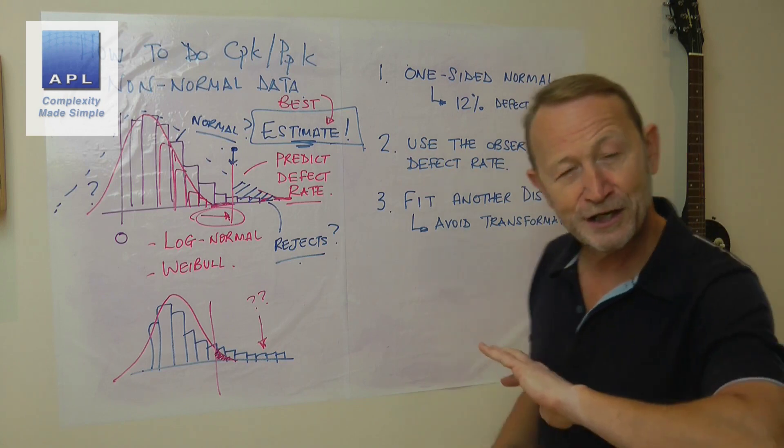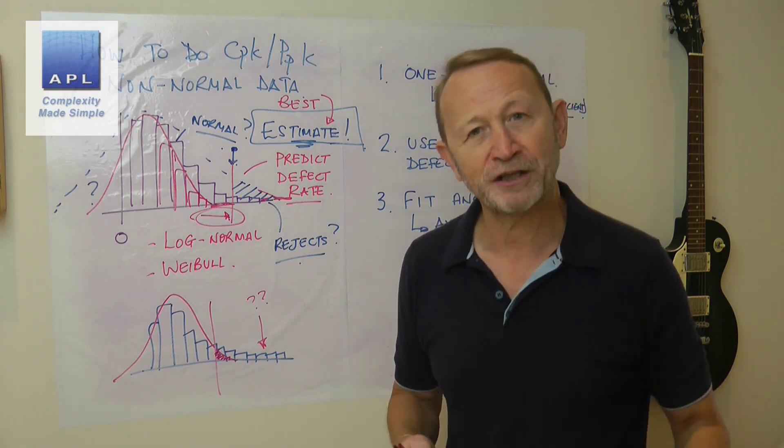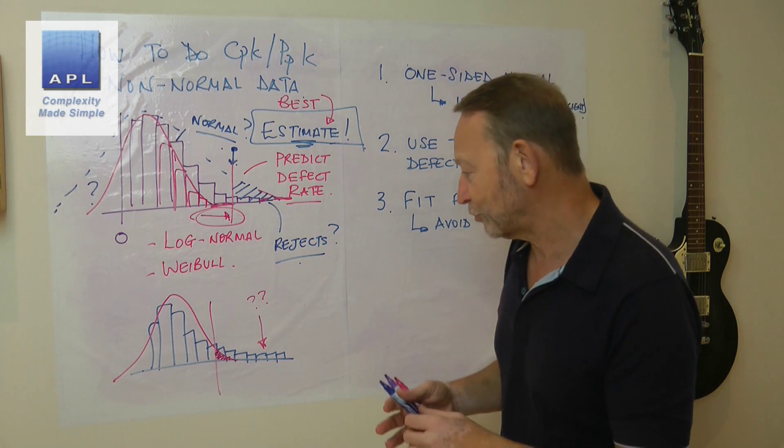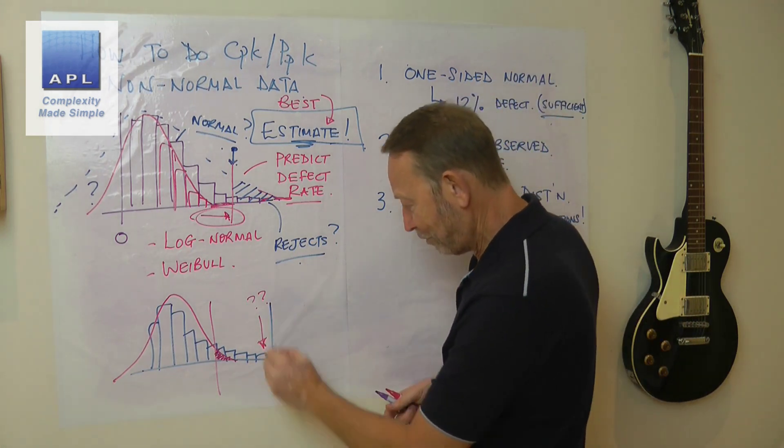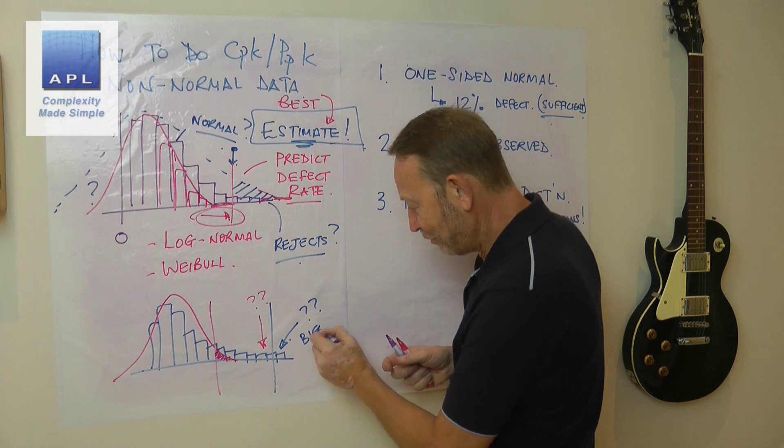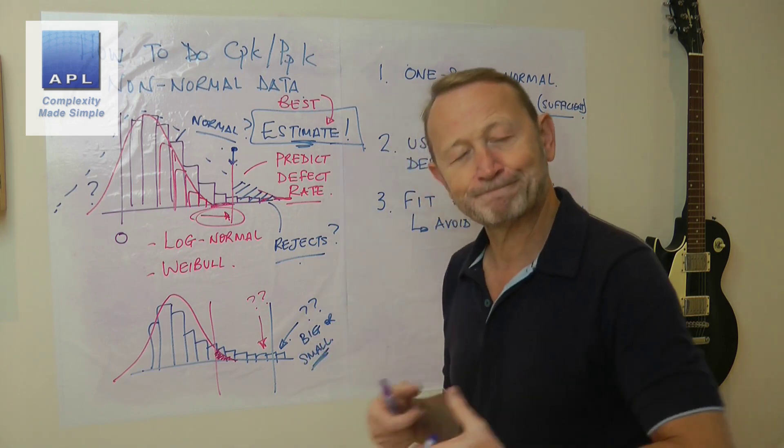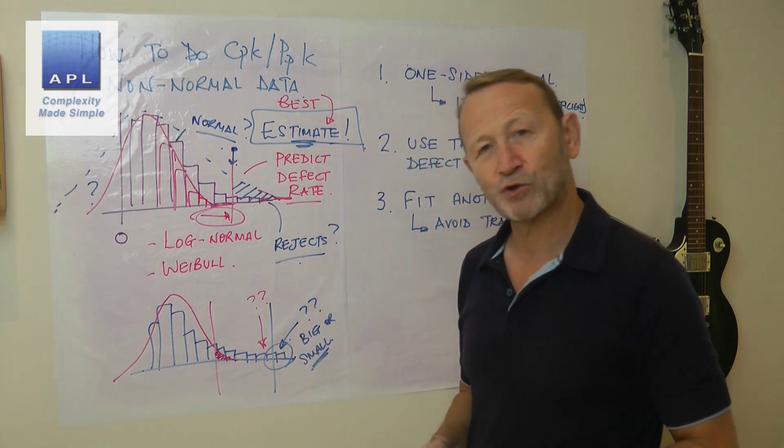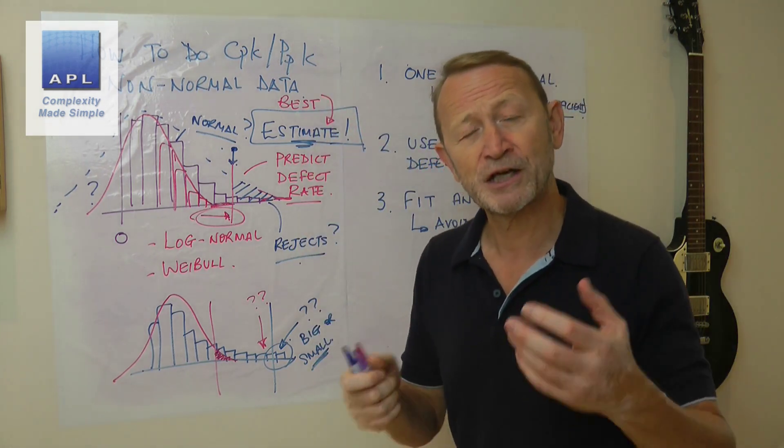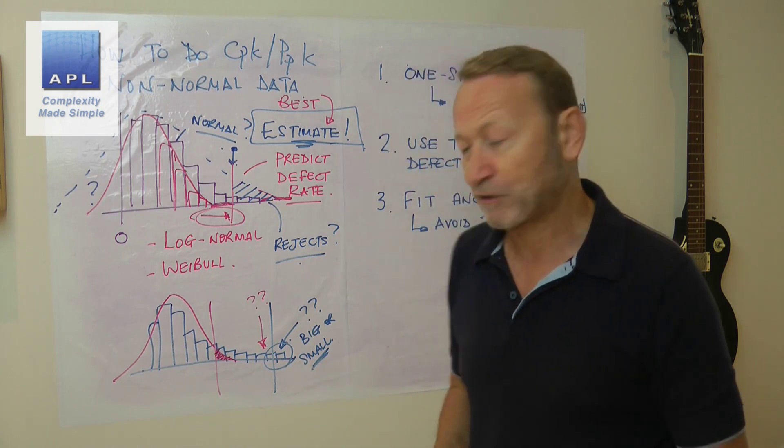Because if you've got a big defect rate, the decision's always going to be the same. Fix it. If the defect rate is tiny, the decision is always going to be the same. Run the process. The time when it gets a little bit dicey is if you've got a, maybe you've got a tolerance here. And you're not sure whether the defect rate is going to be big or small. And now you don't know whether you can run the process. That's the only time that this is going to cause you a problem. What would I be doing then? I'd be definitely using the observed defect rate. So I'd probably push the sample size up a bit. Normally we'd be 30 to 50. I would push the sample size up three or 400, observe the defect rate, and I would use that.